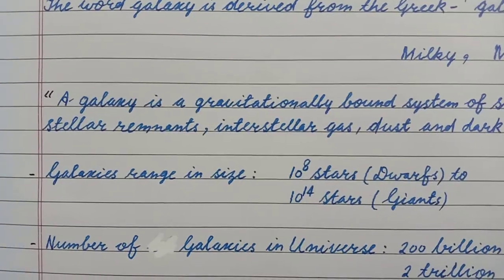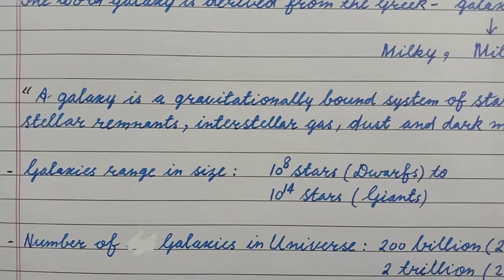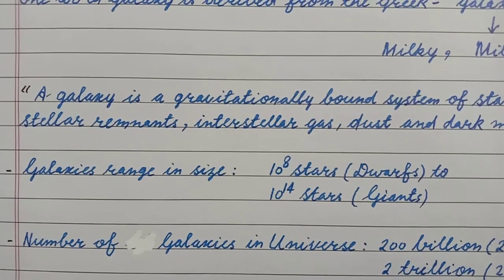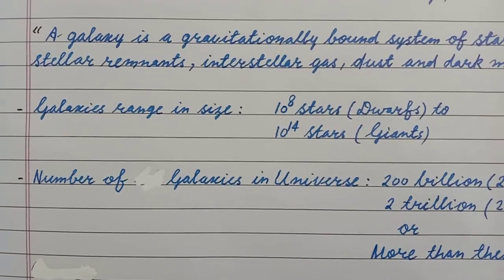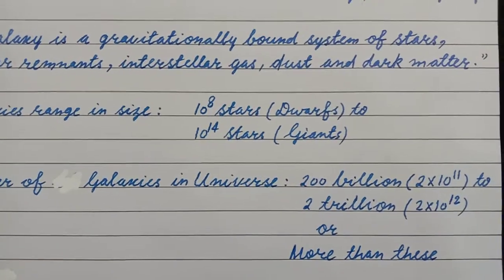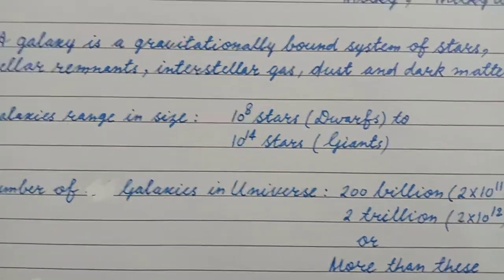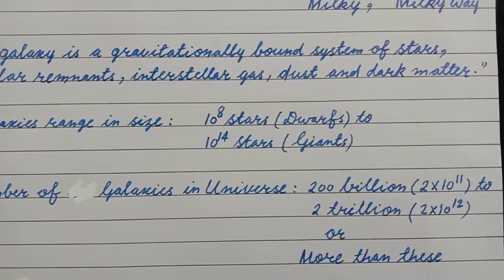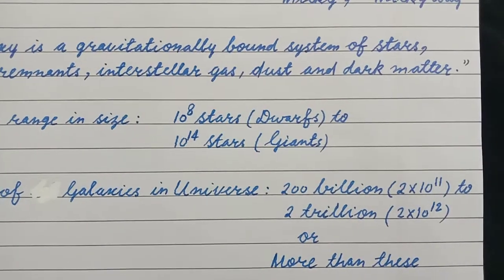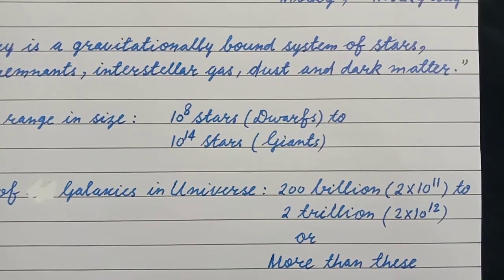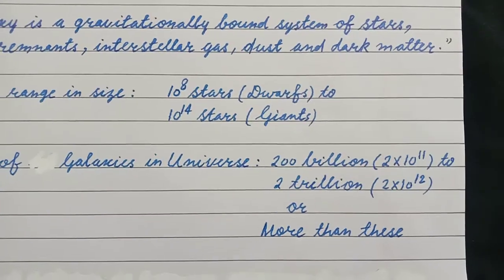Galaxies range in size from 10 power 8 stars to 10 power 14 stars. Number of galaxies in universe: 200 billion to 2 trillion, that is 2 into 10 power 11 to 2 into 10 power 12 or more than these.